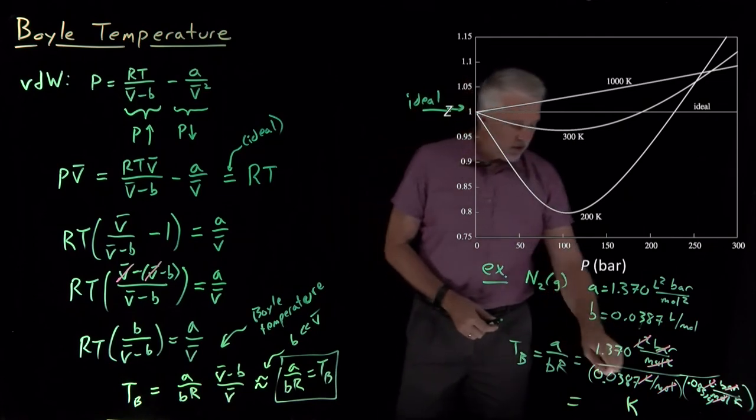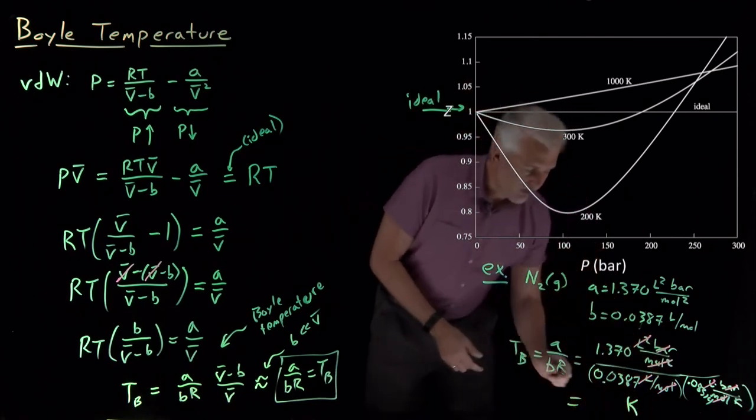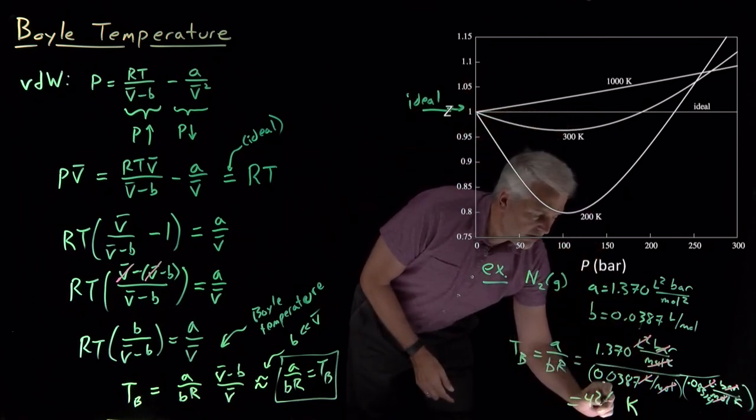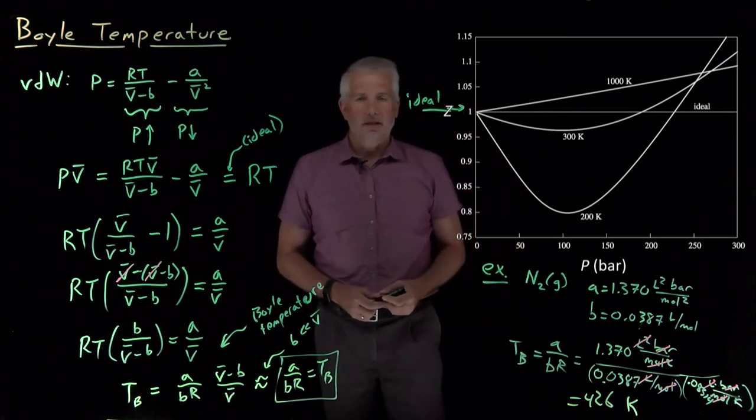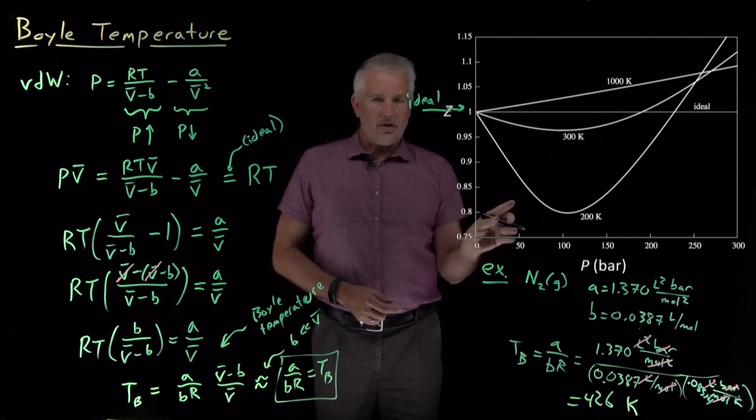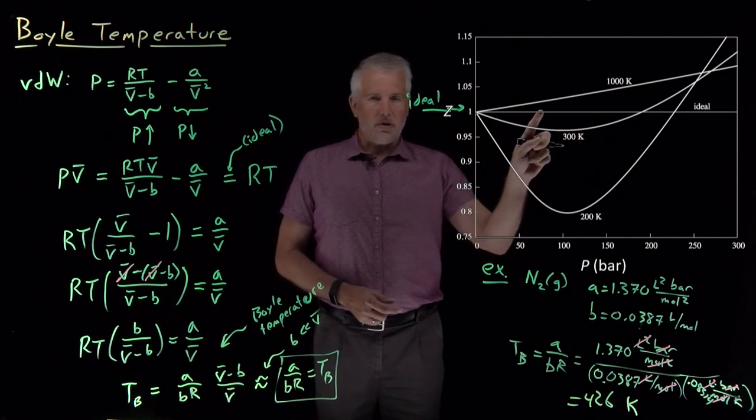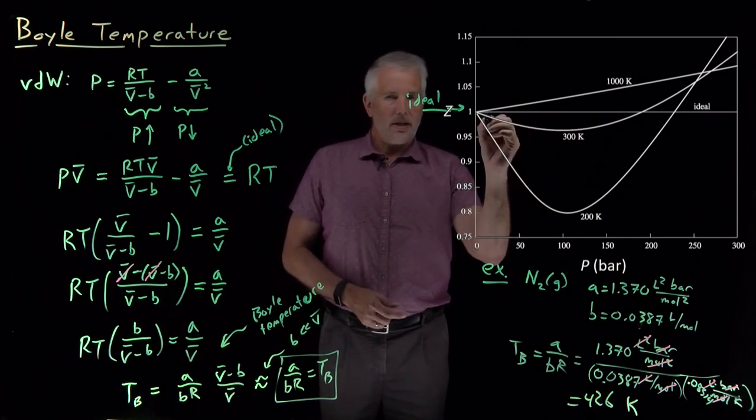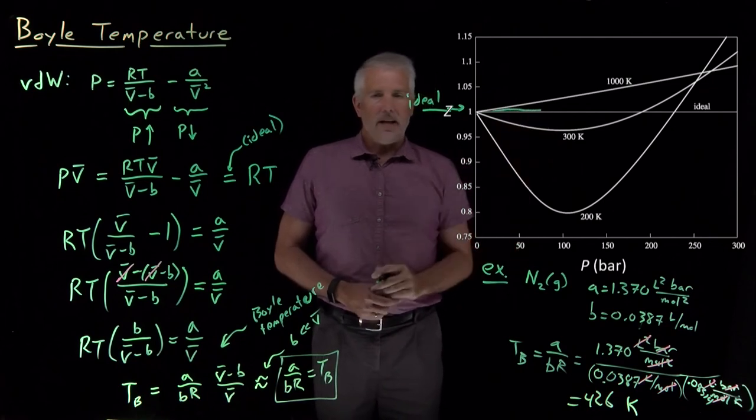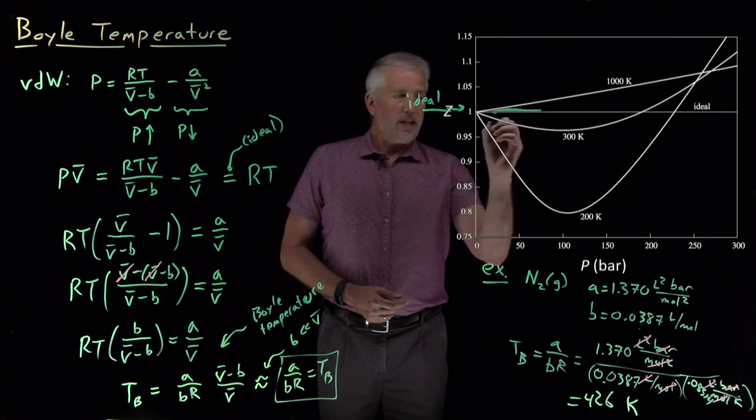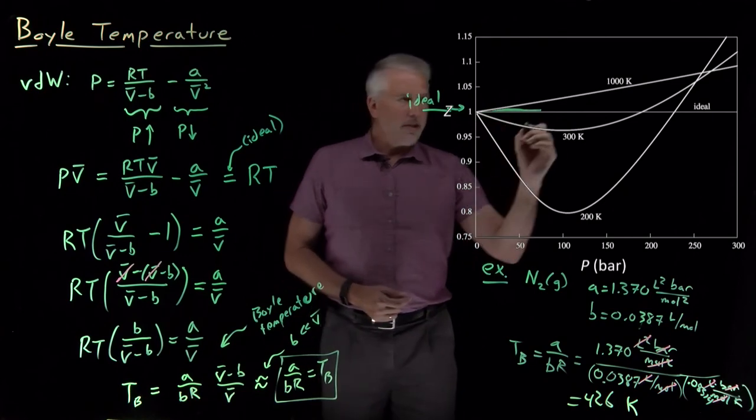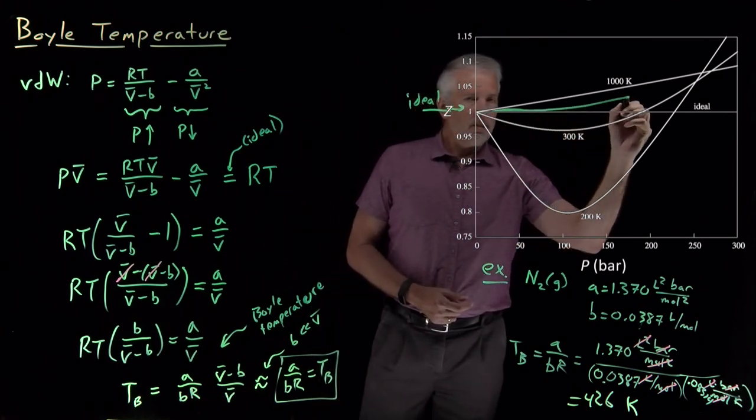And the value, if we plug those numbers into a calculator, the value that we get is 426 Kelvin. So what that tells us is if we were to plot the compressibility factor not at 200 Kelvin, not at 300 Kelvin, but a little higher at 400 Kelvin, that's the temperature where it's going to be flat for an extended range of pressures. It's going to remain fairly ideal over a range of conditions. Eventually, it will still begin to deviate.